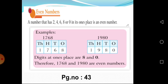Let me show examples. See the numbers 1768 and 1980. See the digits in the one's place. The numbers are 8 and 0. Therefore, 1768 and 1980 are Even Numbers.